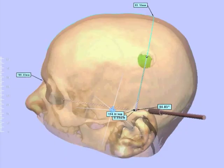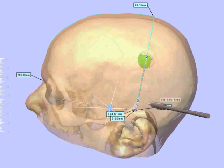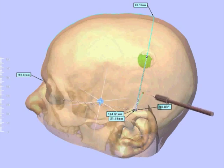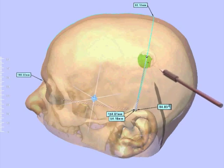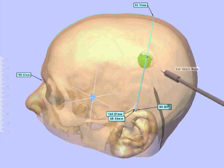On this additional auxiliary line, we then measure the distance to the center of our craniotomy, which is 5.9 cm.